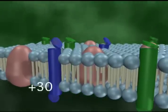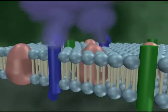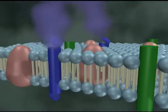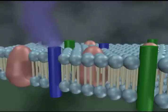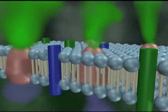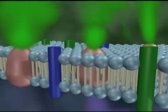At this point, the sodium gates close and potassium gates open. Potassium starts to pour out of the cell. This allows the neuron to become polarized again. Then the sodium-potassium pump starts to actively transport sodium out and potassium back into the neuron.